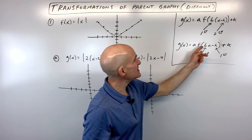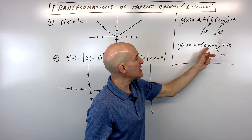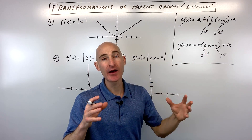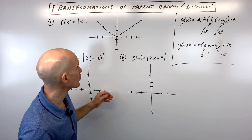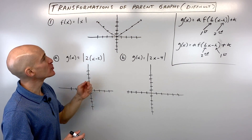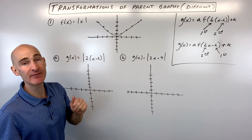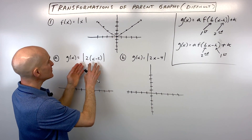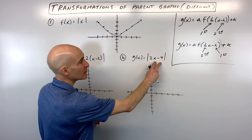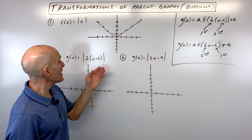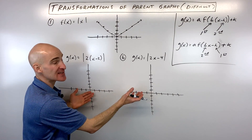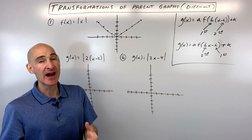When the b value is not factored out — it's distributed in — you want to do the horizontal shift first, then follow it with the horizontal stretch or compress. For example, we'll compare g(x) = |2(x − 2)| and g(x) = |2x − 4|. You might say these are exactly the same — distributing the 2 gives 2x − 4 — and you'd be right; we'll get the exact same graph, but the steps describing the transformations will be different.